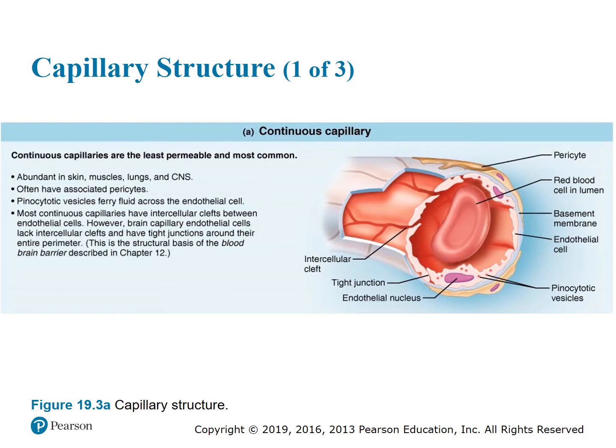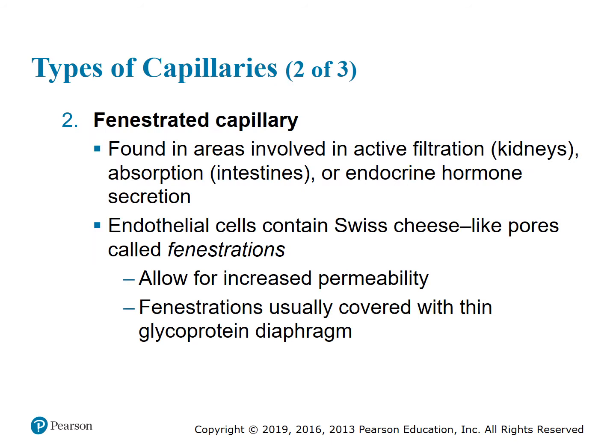This accounts for the blood-brain barrier, which we will discuss in chapter 12. Another type of capillary is the fenestrated capillary, found in areas of active filtration such as the kidneys, absorption in the intestines, or endocrine hormone secretion. Endothelial cells contain Swiss cheese-like pores called fenestrations — like little windows (fenêtres in French) — that allow for increased permeability and are usually covered with a thin glycoprotein diaphragm.